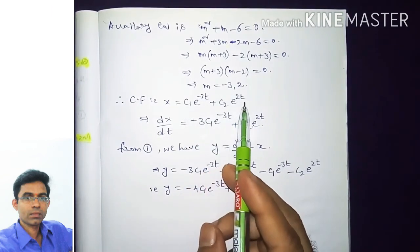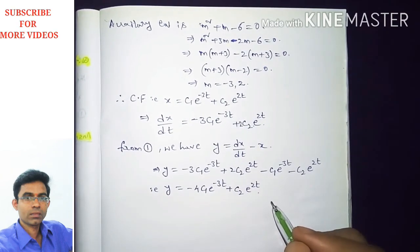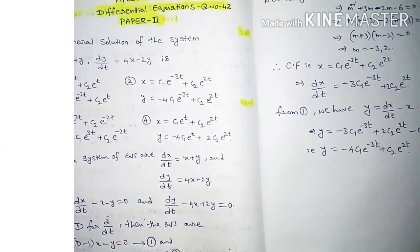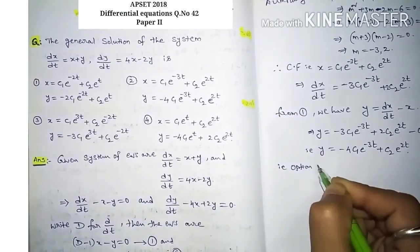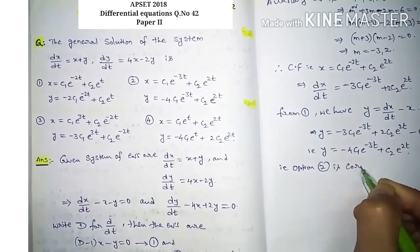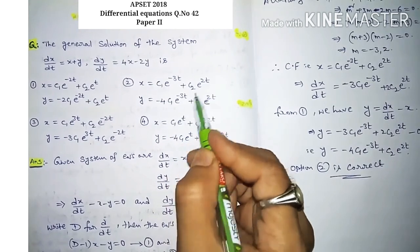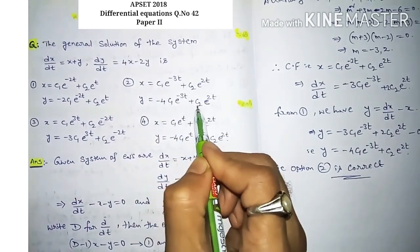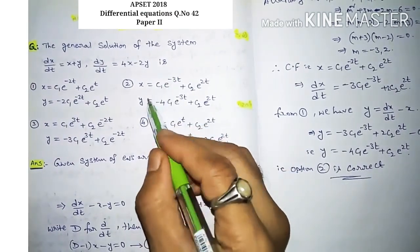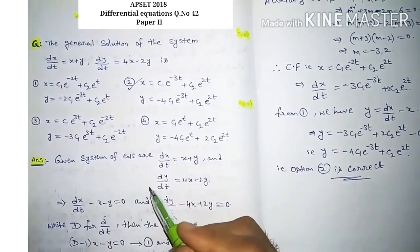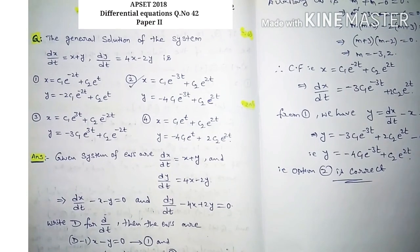Therefore the general solution is x = c1·e^(−3t) + c2·e^(2t) and y = −4c1·e^(−3t) + c2·e^(2t). Option number 2 is correct. I hope you liked this video — please share and subscribe. Thanks for watching.